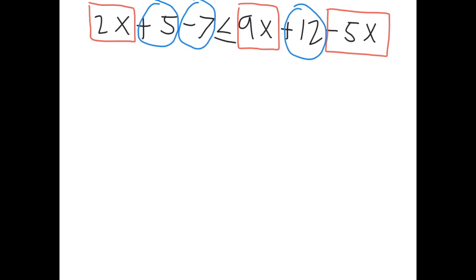The 2x drops down, and five minus seven is negative two, so we have minus two. Then less than or equal to. On the right side, 9x minus 5x is 4x, and the plus twelve stays plus twelve.